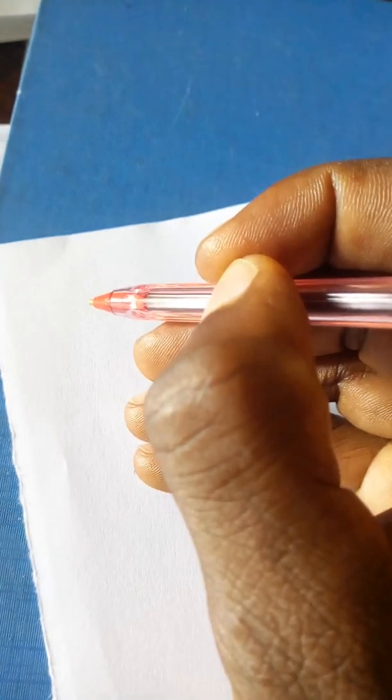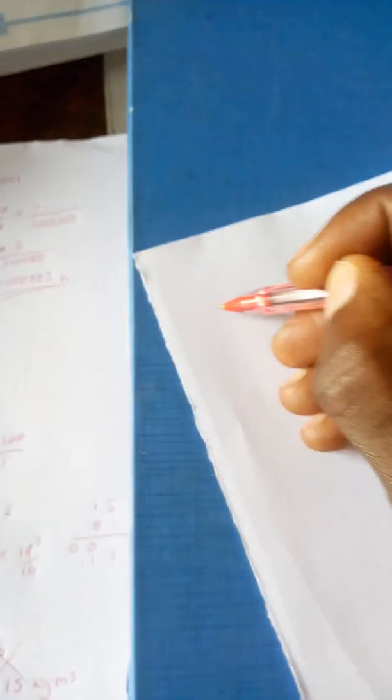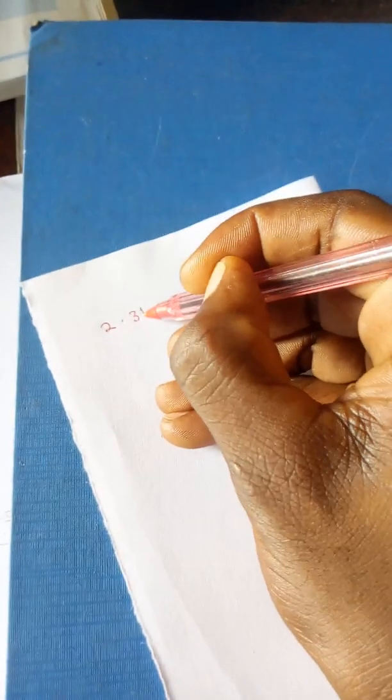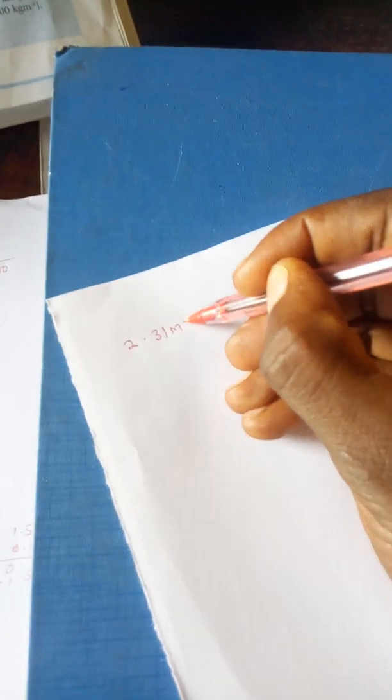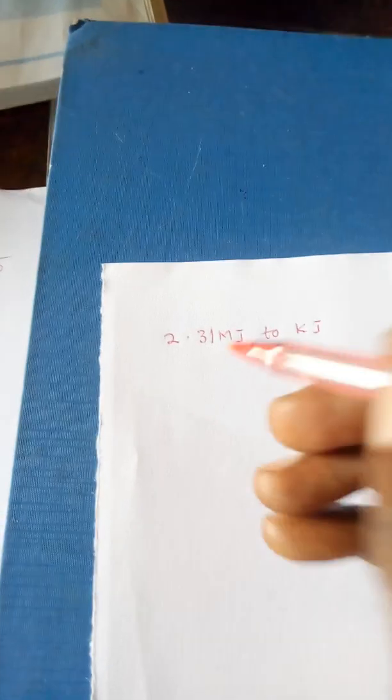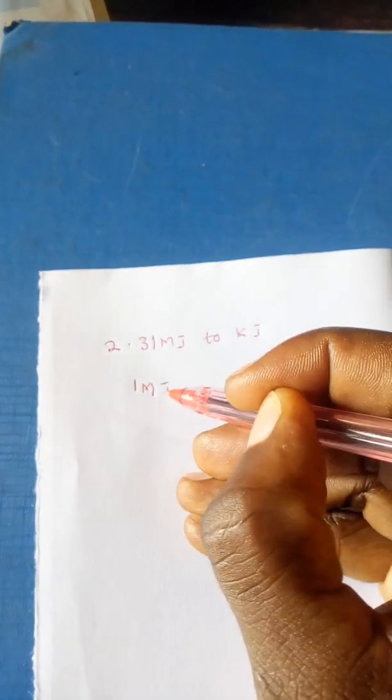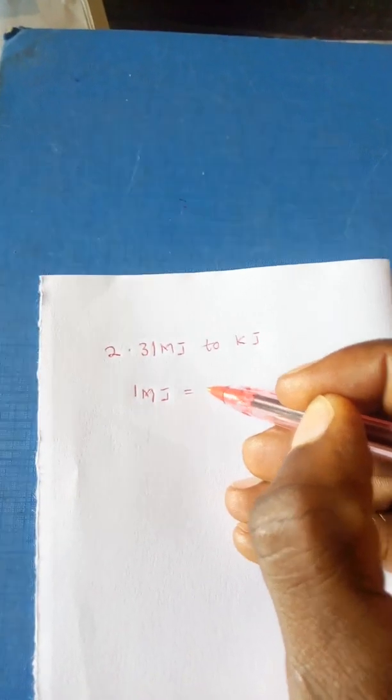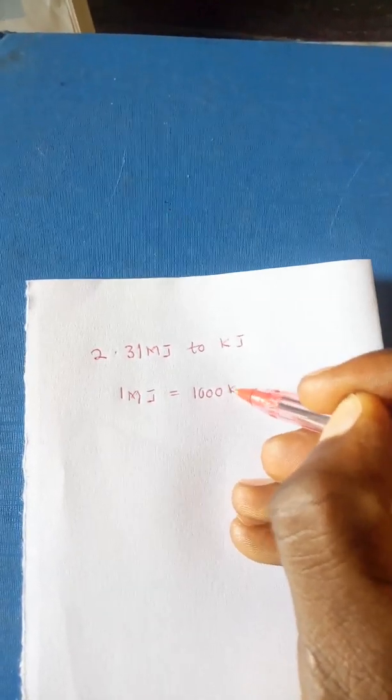So we are going to convert 2.31 megajoules to kilojoules, the SI unit of energy. We have 2.31 megajoules to kilojoules. Now, 1 megajoule is equal to 1000 kilojoules.